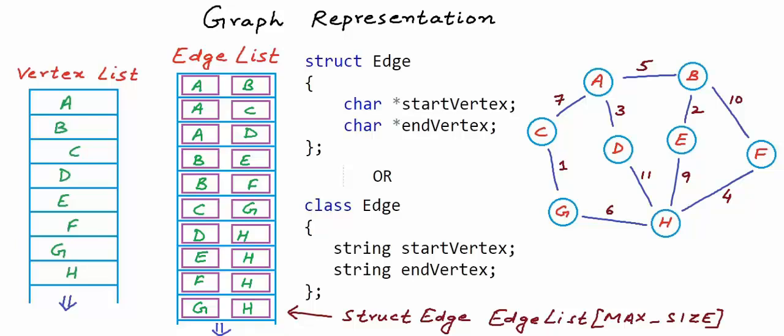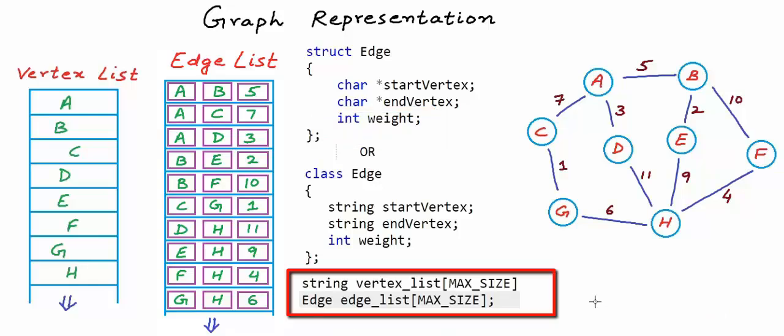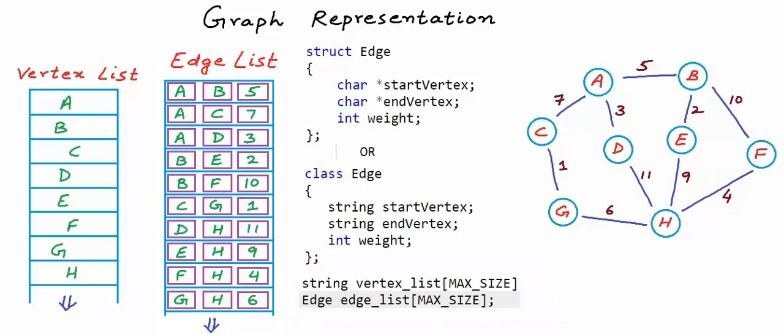If the graph is weighted, we can have one more field in the edge object to store the weight. Now an entry in the edge list has three fields: one to store the start vertex, one to store the end vertex, and one more to store the weight. So this is one possible way of storing a graph — we simply create two lists, one to store the vertices and another to store the edges. But this is not very efficient.